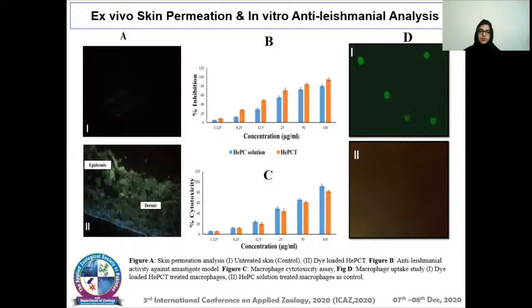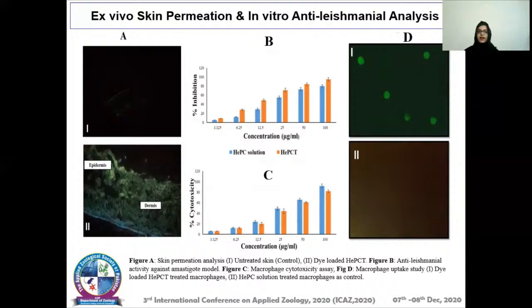Next is the ex vivo skin permeation study, performed because miltefosine has a permeability issue. The dye-loaded transethosomes penetrated into deeper layers of the skin very easily, showing that permeation can be enhanced by incorporating the drug into transethosomes. However, we needed sustained release, so the transethosomes were further loaded into a gel. In vitro anti-leishmanial analysis showed the percentage inhibition for HEPC-TG is greater compared to HEPC solution, indicating higher inhibition of the leishmanial parasite.